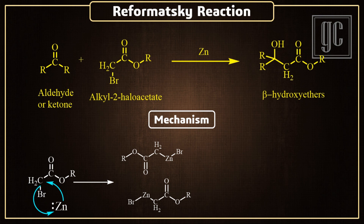Now, two similar intermediates interact with each other, and in this process, the carbonyl of one intermediate attacks on zinc. As a result, the shifting of sigma and pi electrons takes place, and the enolate is formed.